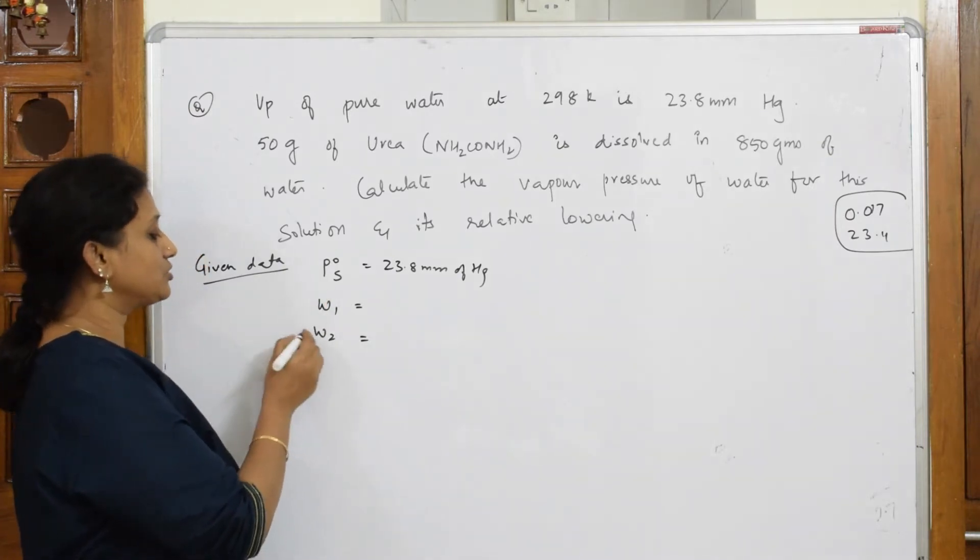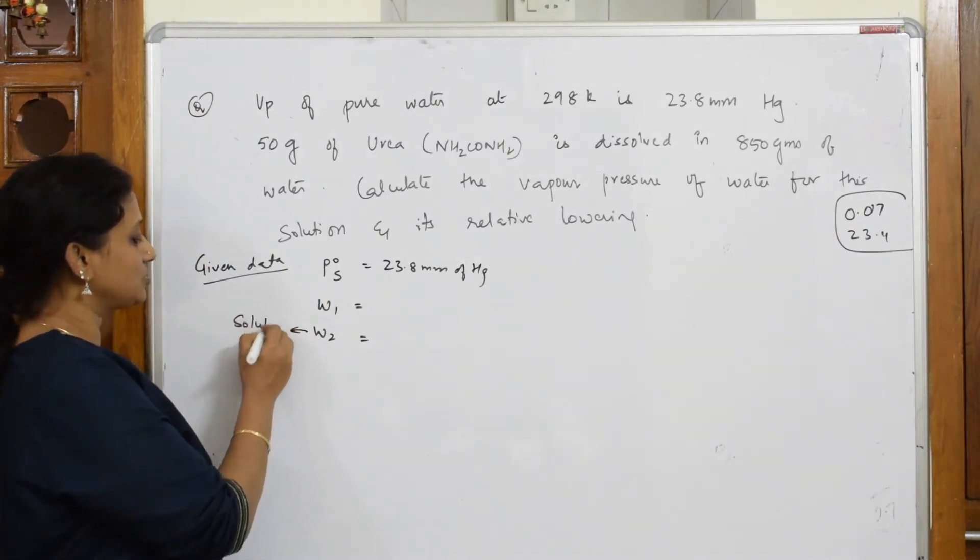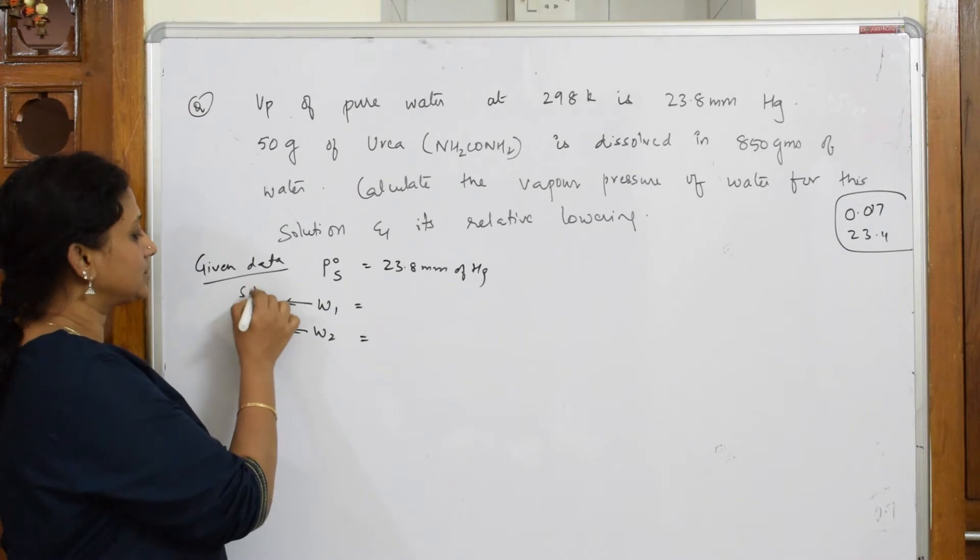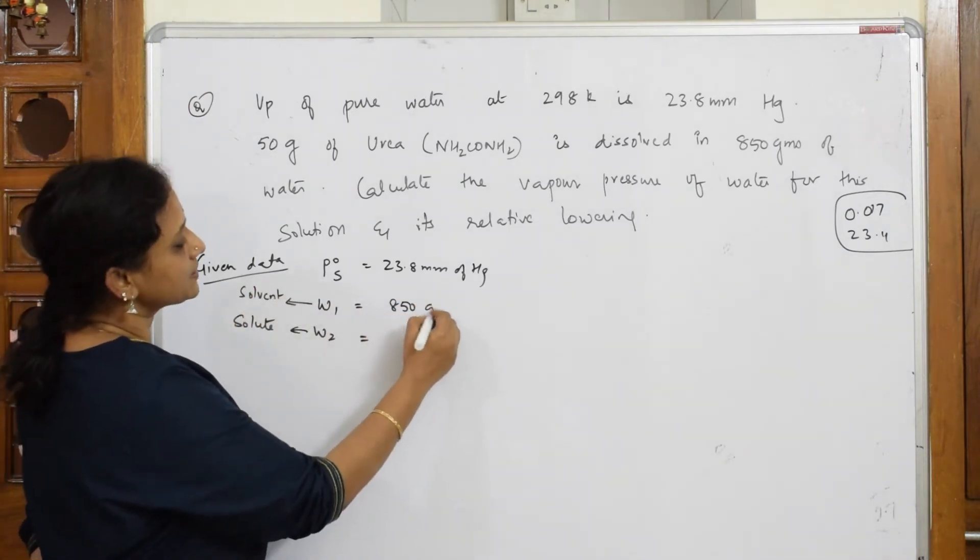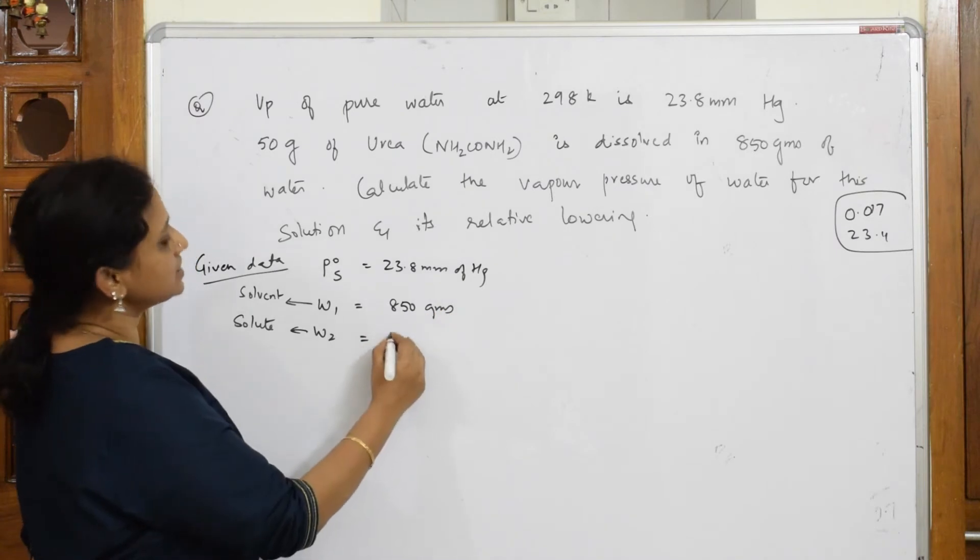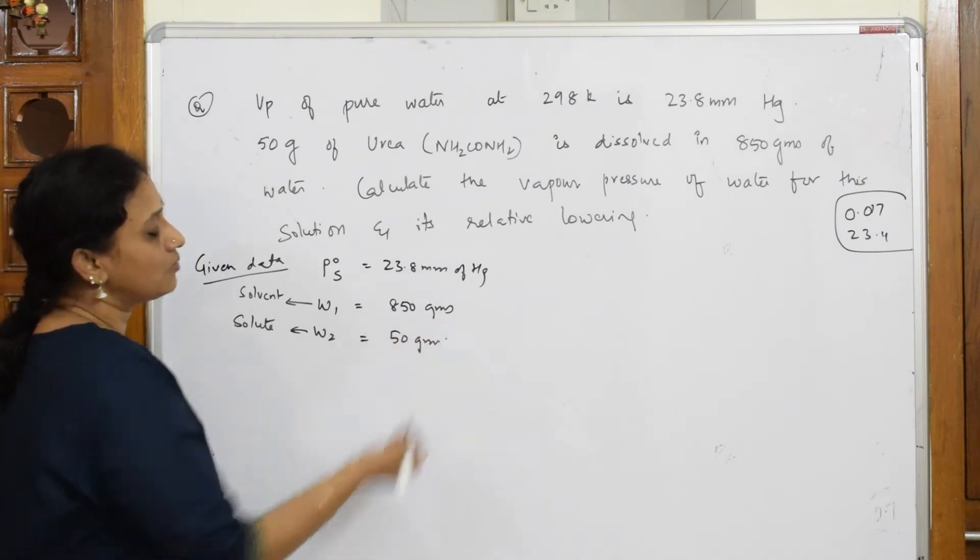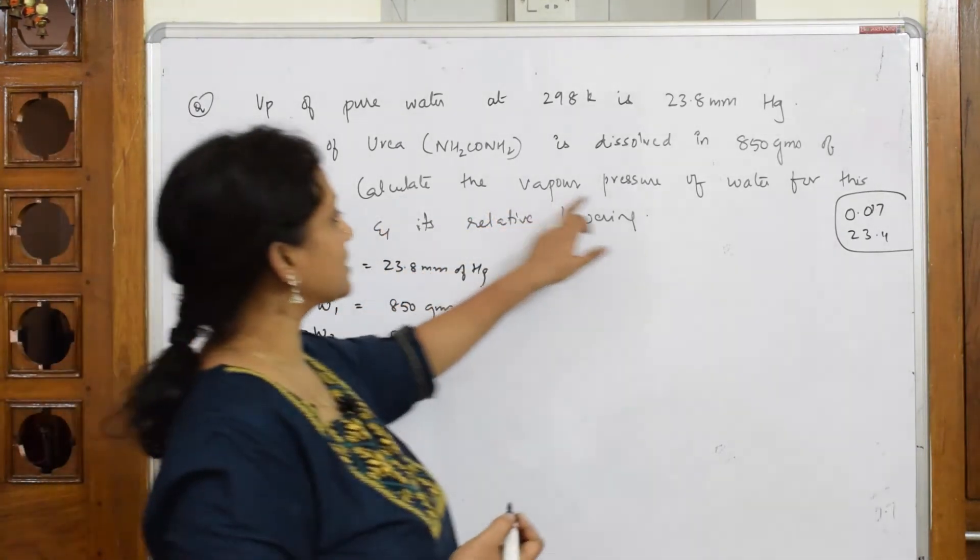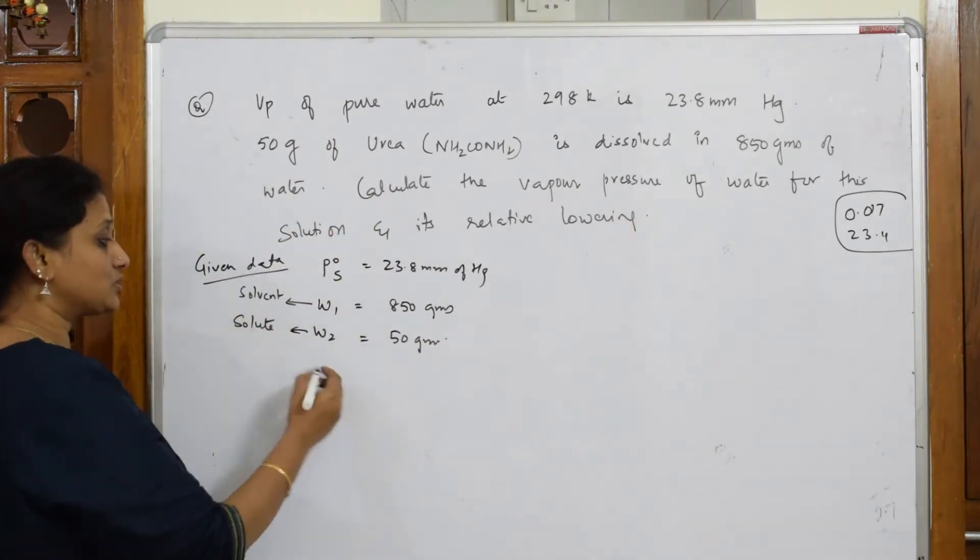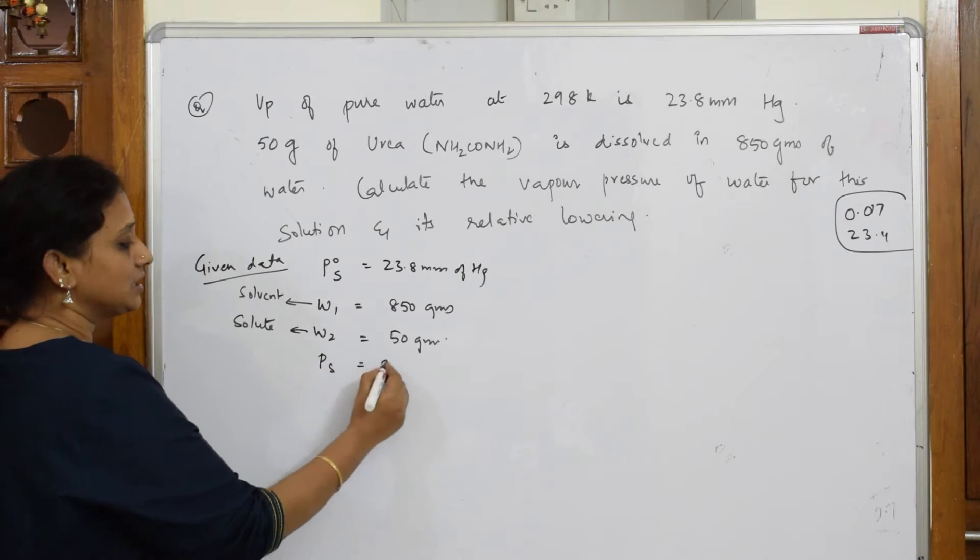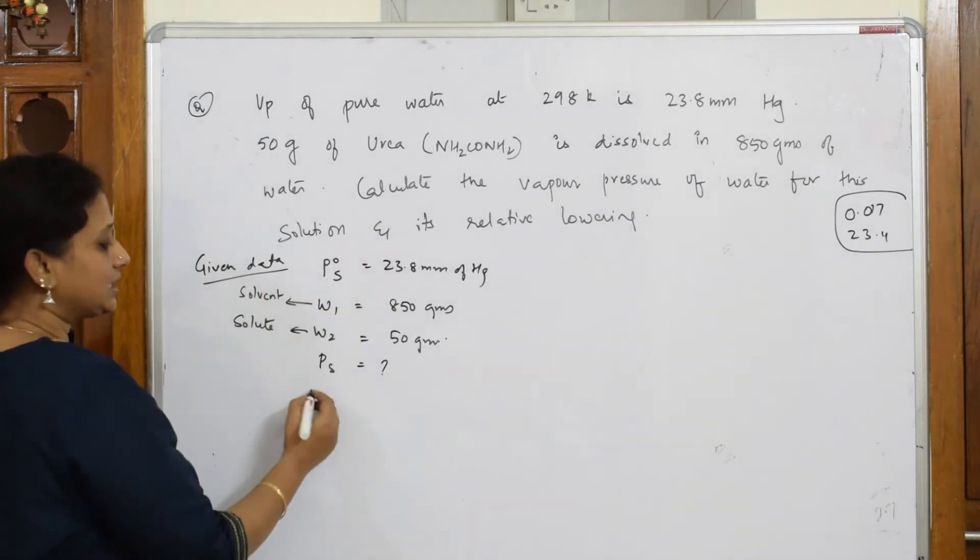So let's write w1 and w2. They always try to pick up the solvent as w2, so the solute is w1. I'm taking this as solute, this as solvent. So solvent given is 850 grams, solute given is 50 grams. What should I calculate? Calculate the vapor pressure of water for the solution.